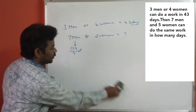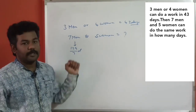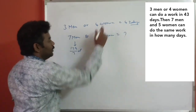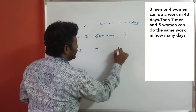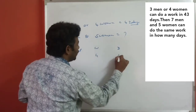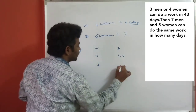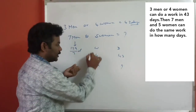What is the value of x for men? Next, for women, the value of x: 4 women, 43 days; 5 women, 44 days. So this is the value of x for women.